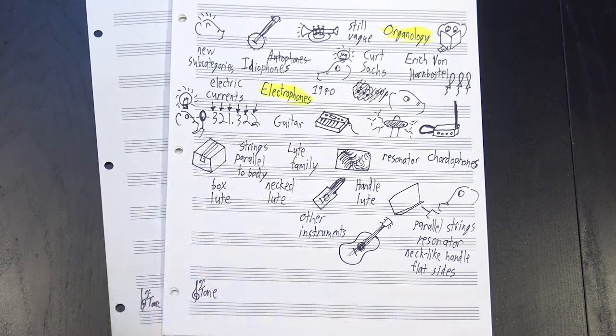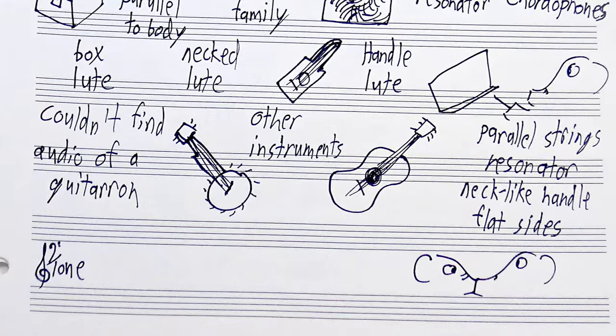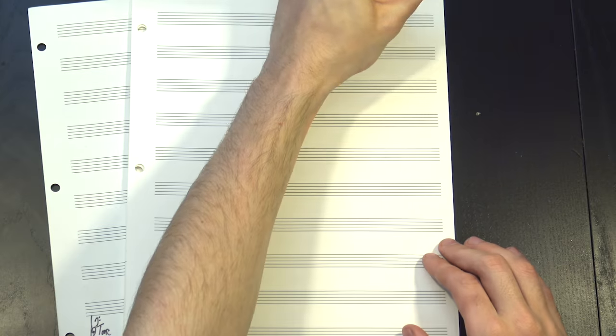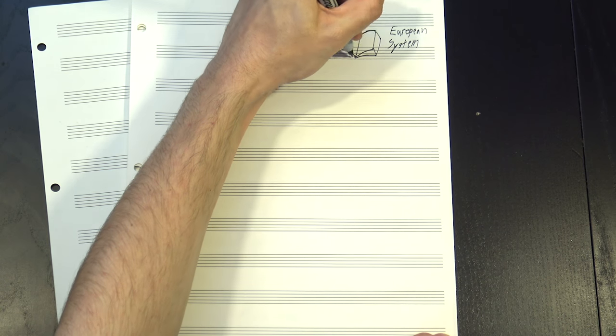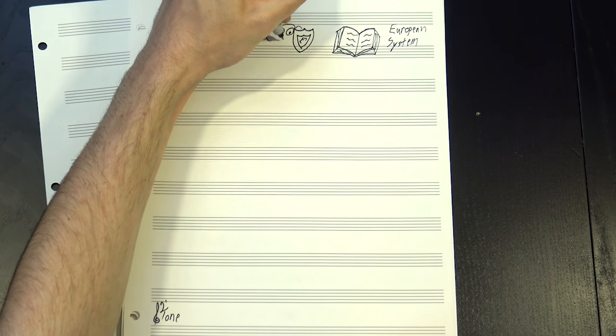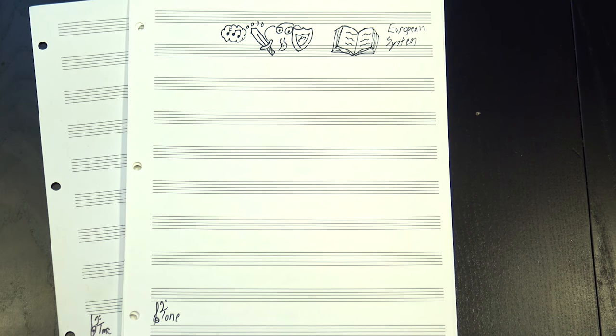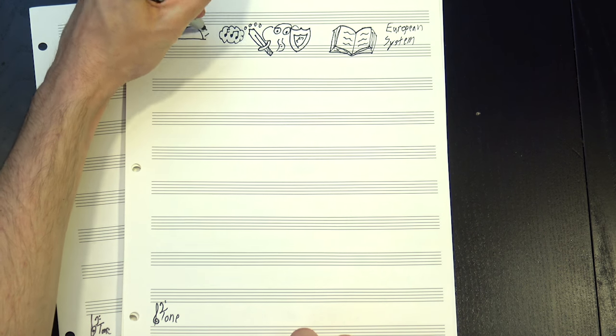It still includes some other instruments, like the banjo or the guitaron, but that just emphasizes how closely related those instruments are. But that's just the European system. It's the most common one today partly because it's so comprehensive, but also partly because Europe has a bit of a history of aggressively exporting its culture, and looking at how other people approach this problem can shed some fascinating light on how they interact with music.